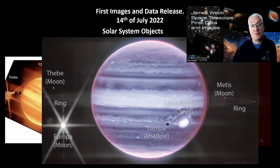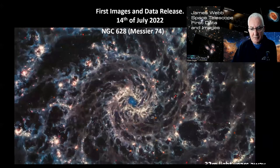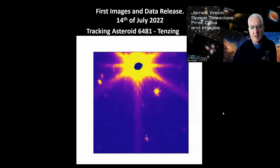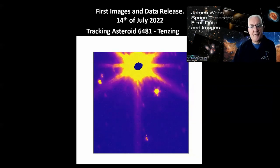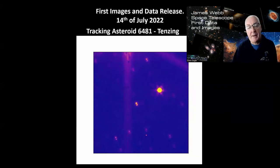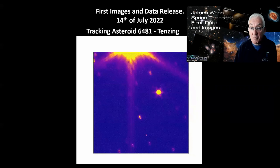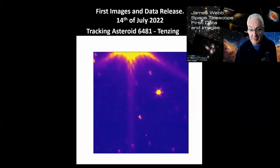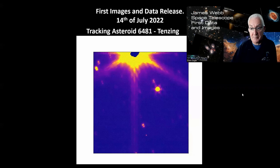The telescope also did some tracking of asteroid 6481 Tenzing, which is moving at about the same speed as Mars does in the sky. They wanted to see whether the Webb Space Telescope could successfully track it, and you can see quite clearly it moving away from a bright star while the telescope tracks it really, really nicely - absolutely beautiful.